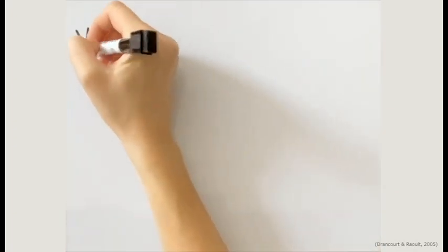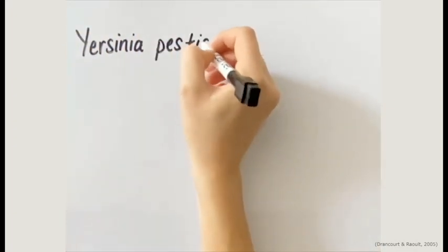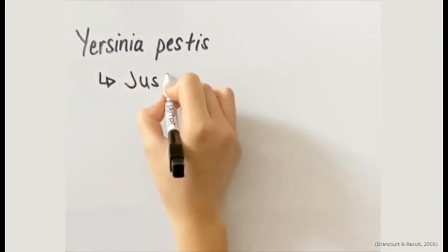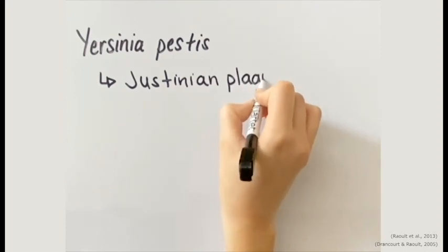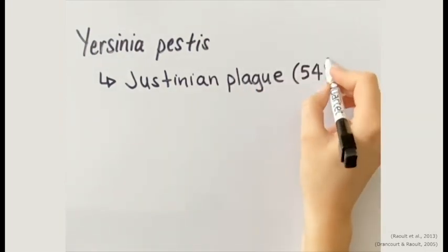One prominent microbe that left its mark throughout history is the bacterium Yersinia pestis. This bacterium was found to be responsible for several pandemics throughout history, termed plagues. The first confirmed occurrence of the plague was the Justinian plague, which started in the year 541.